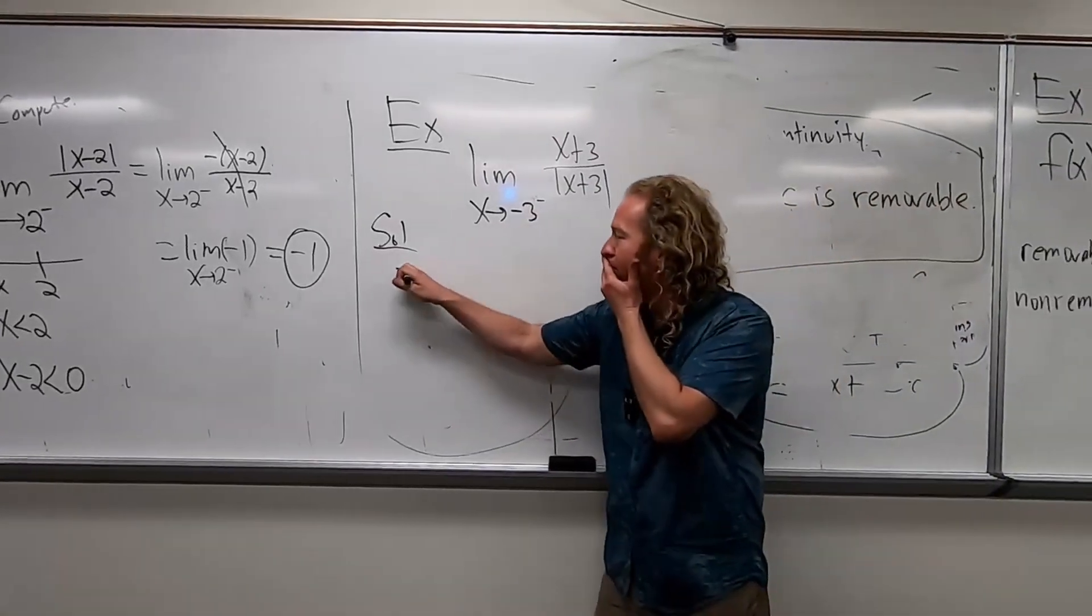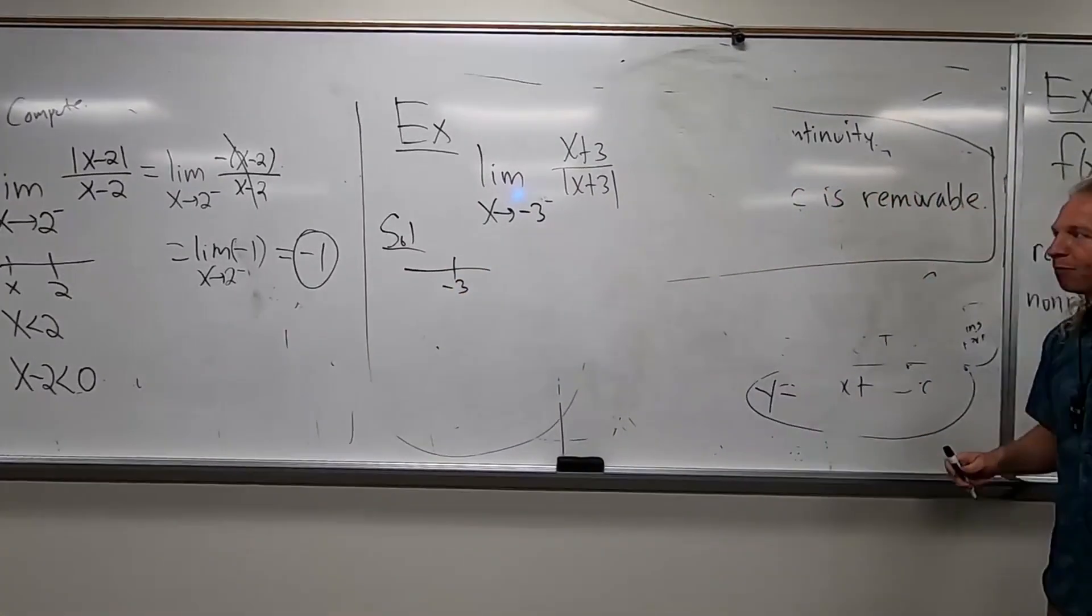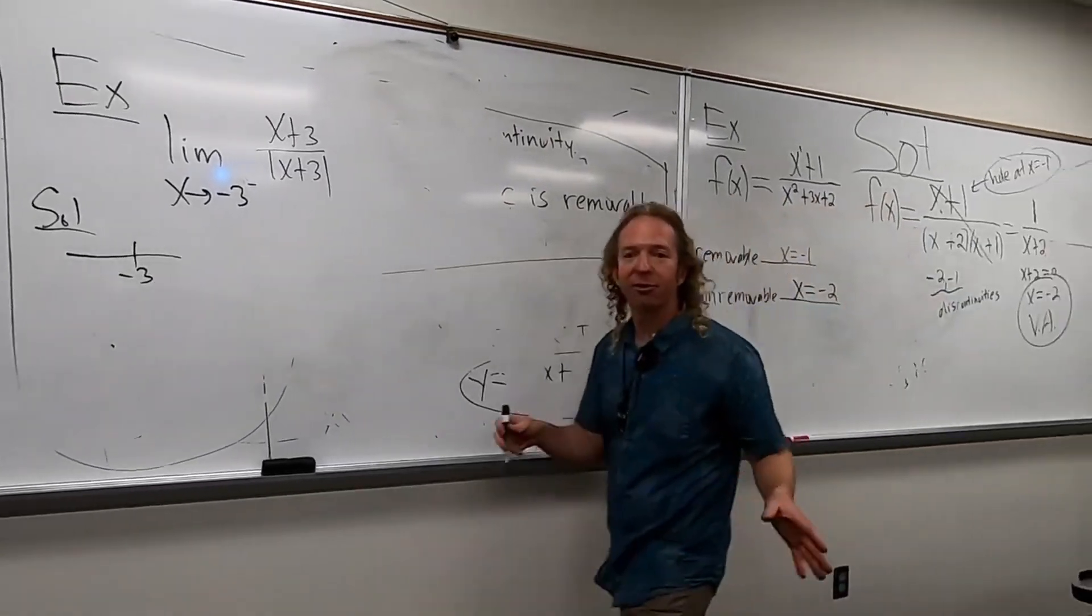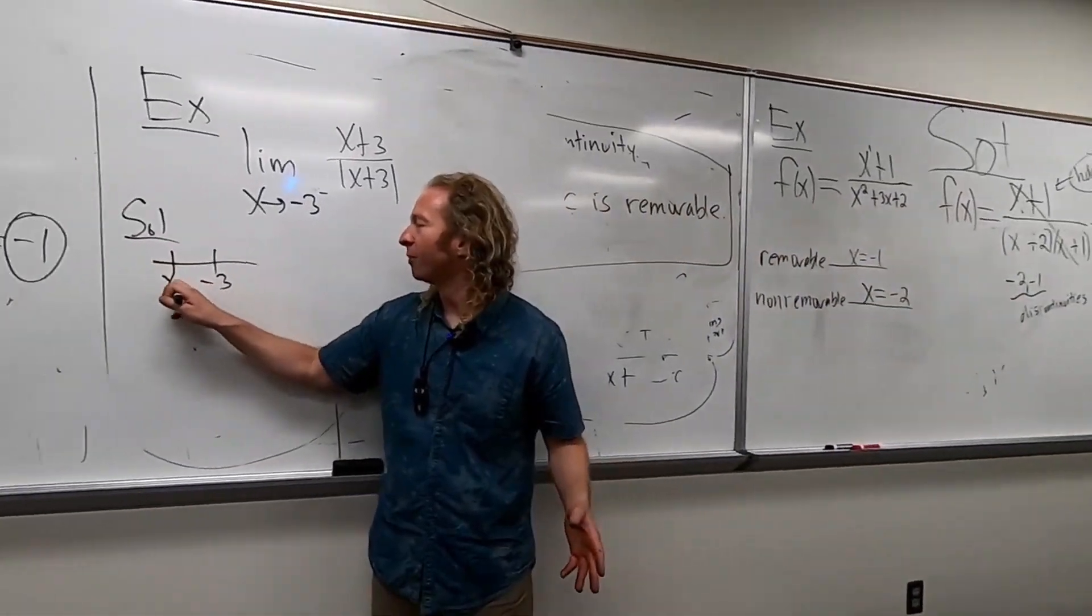Let's draw a picture. Here's negative three. We're approaching from the left, right? So that's over here. So we're going this way.